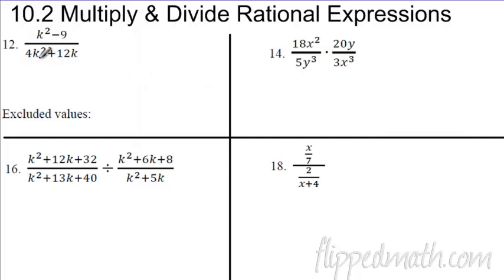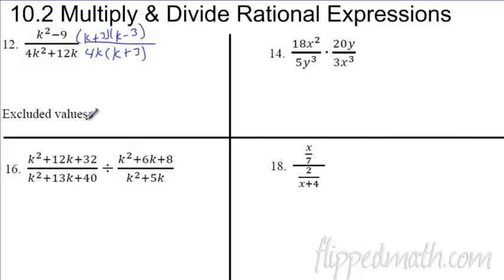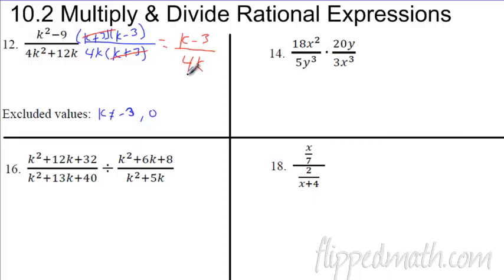Moving to 10.2 — multiply and divide. First we have to simplify. The numerator factors to k plus three times k minus three. The denominator — you can factor out a 4k, leaving 4k times k plus three. Excluded values come from the denominator: k cannot equal negative three or zero, otherwise you'd be dividing by zero. After canceling k plus three, you're left with k minus three over 4k.